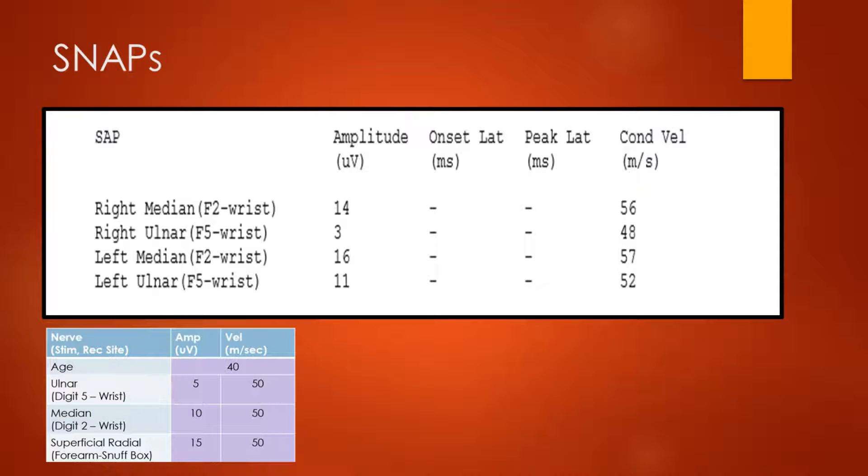If we have a look at the right ulnar sensory response from finger 5, we can see that the amplitude here is just 3 microvolts and a conduction velocity of 48 meters per second. So 3 microvolts as an amplitude is small. Let's have a look at the contralateral side, which is asymptomatic here, and we can see on that side it's actually 11 microvolts. So there's a clear diminution of the ulnar sensory response on the right side. The left median response is 16 microvolts, 57 meters per second, so very symmetrical to the right side. And on the left, we've already discussed, that's a very normal ulnar response. So in summary from the sensory nerve action potentials, we can see clearly that there is a small amplitude of the finger 5 response.